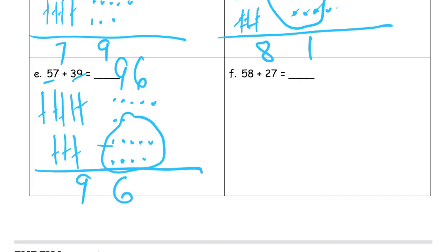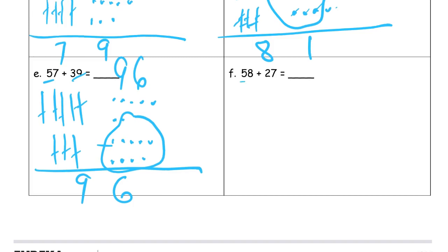Now we're looking at 58 plus 27. So 58 — I need five tens: one, two, three, four, five — and eight ones: one, two, three, four, five, six, seven, eight.